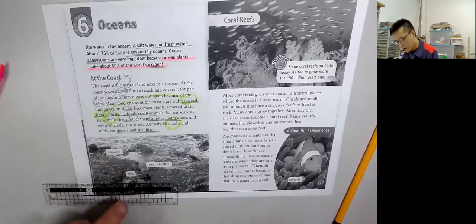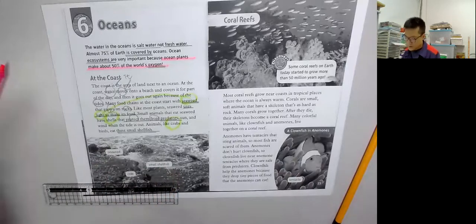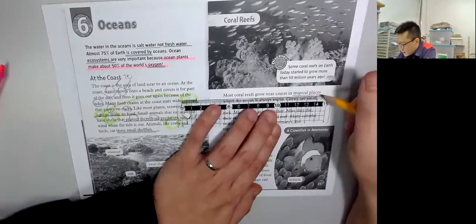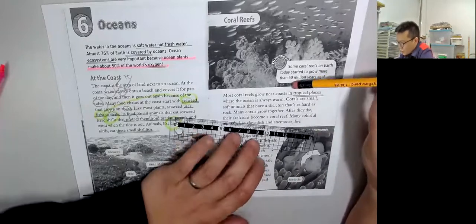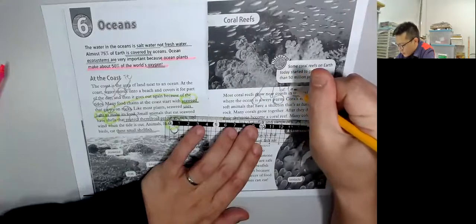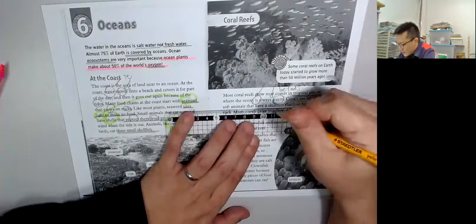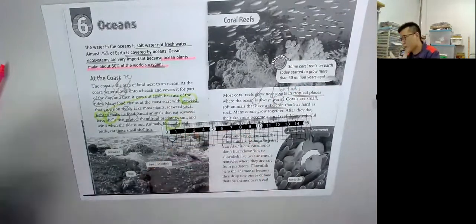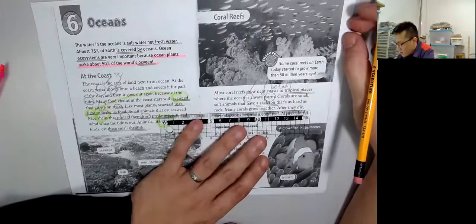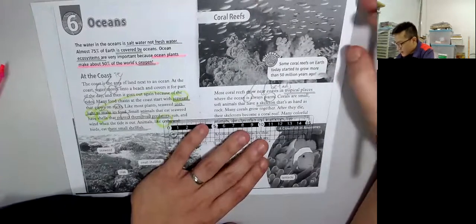And most coral reefs, 珊瑚, coral reefs grow near coast in tropical places, 熱帶的地方, where the ocean is always warm. Corals are small, soft animals that have a skeleton. That's as hard as rock, and many coral grow together. After they die, their skeletons become a coral reef.